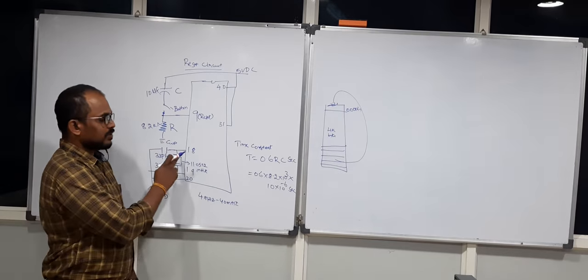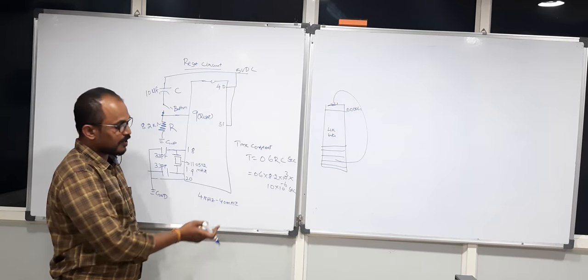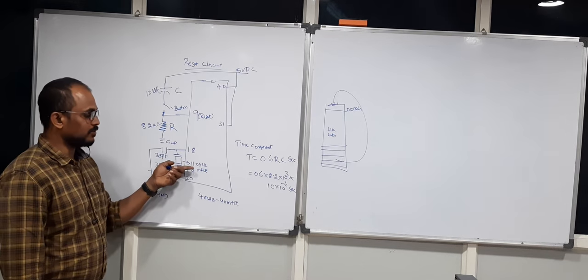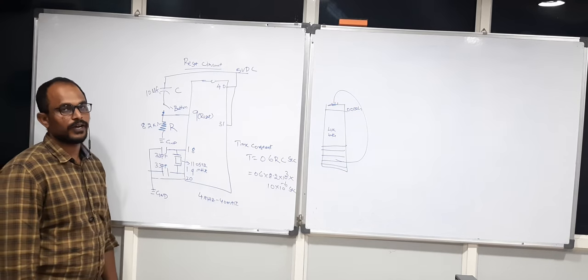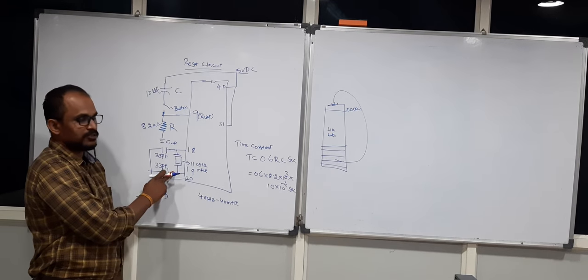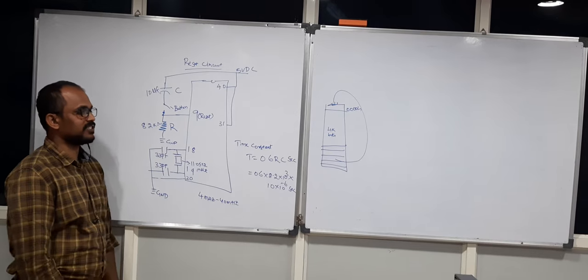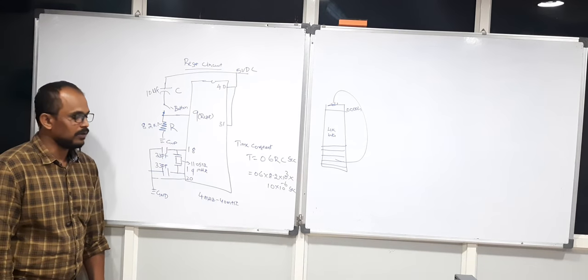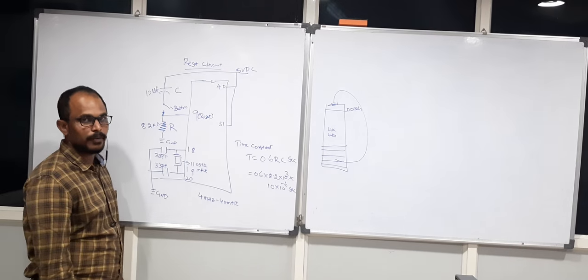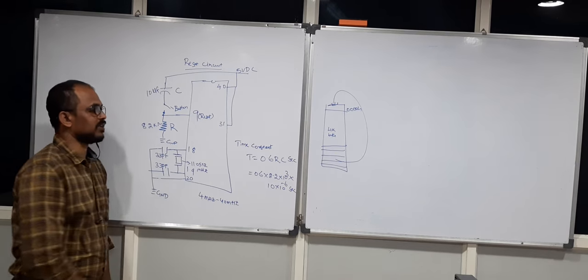This specific frequency of 11.0592 megahertz is interlinked with the serial communication feature. If you are not looking for serial communication, you can use any frequency in the 4–40 megahertz range. The reason for this specific frequency is that it affects the baud rate. I am also connecting two capacitors in series — if any noise is generated by the oscillator, it is filtered through these capacitors. For embedded products that run 365 days continuously, temperature or overheating may disturb the oscillator, so these capacitors act as filters.